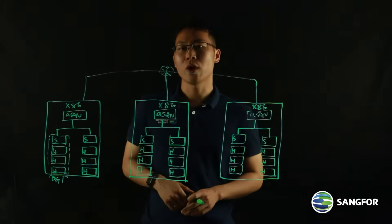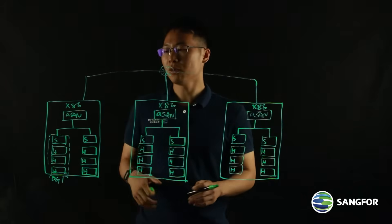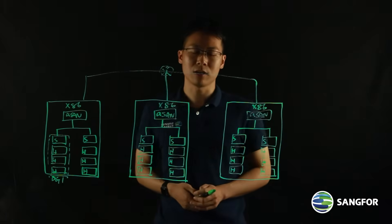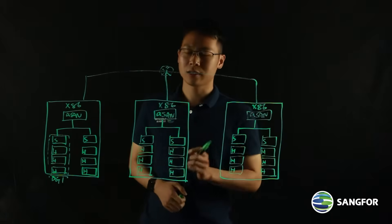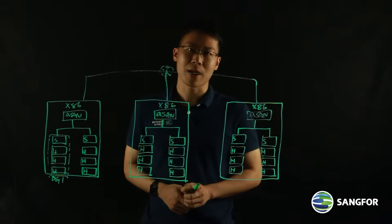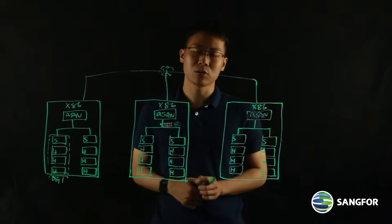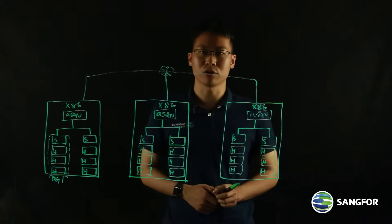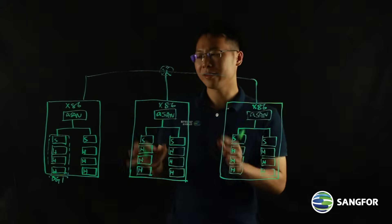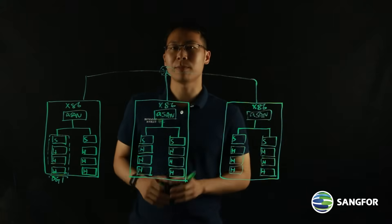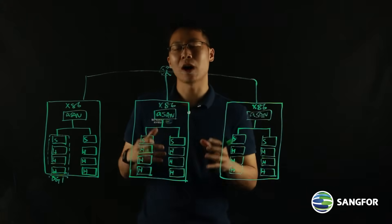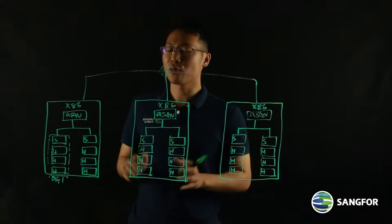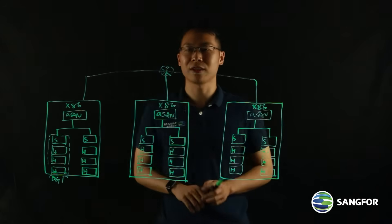Based on that, we are also leveraging data striping technology. This technology came out with our 5.8.6 version, and with data striping, the performance of our ASAN has been improved significantly.